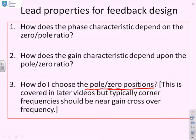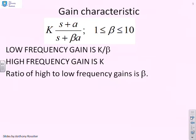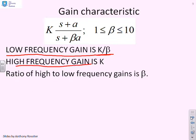This is covered in later videos, but what you should notice is you would typically expect the corner frequencies to be near the gain crossover frequency. Looking at the gain characteristics in more detail: by inspection, the low frequency gain is k over beta and the high frequency gain is k, so the ratio of the high to low frequency gains is beta.